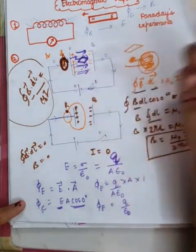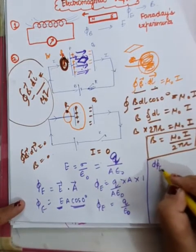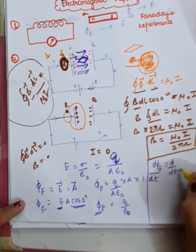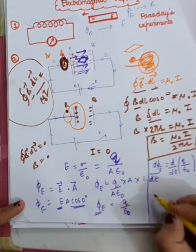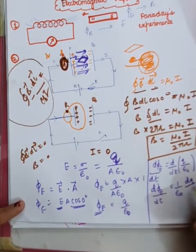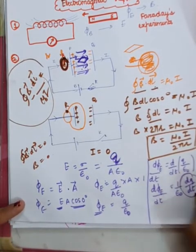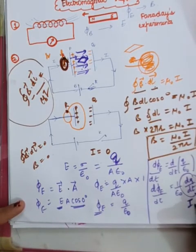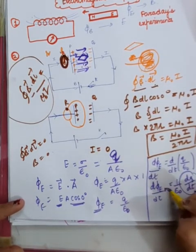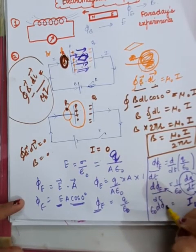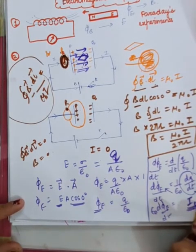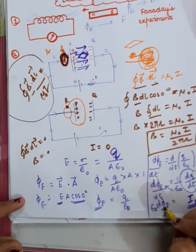Let me calculate the rate of change of electric flux: d(phi_E)/dt = (1/epsilon-naught) × dQ/dt. But dQ/dt — charge per unit time — is some sort of current. Let's call it I_D. Rearranging: I_D = epsilon-naught × d(phi_E)/dt. So there is a sort of current arising because of the rate of change of electric flux, and that current exists between the two plates of the capacitor.